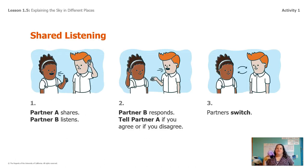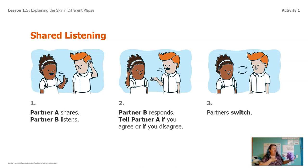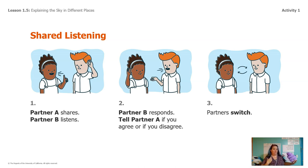This is how the shared listening is going to go. Partner A shares — I'm going to be partner A. I'm going to share and partner B is going to listen. Then partner B responds and says if they agree or disagree, and then you switch. So you share, listen, respond, and then agree or disagree.